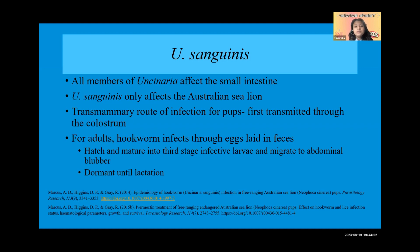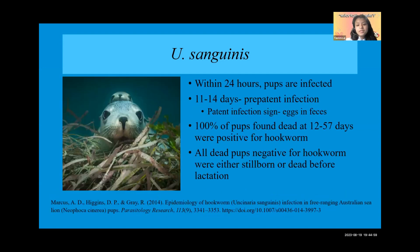At the third-stage infective larvae point, they will migrate to the abdominal blubber. If the Australian sea lion is female, these will remain dormant until she starts lactating. If it is a male, the infection will begin. Within 24 hours of being born, Australian sea lion pups are already infected with U. sanguinis.